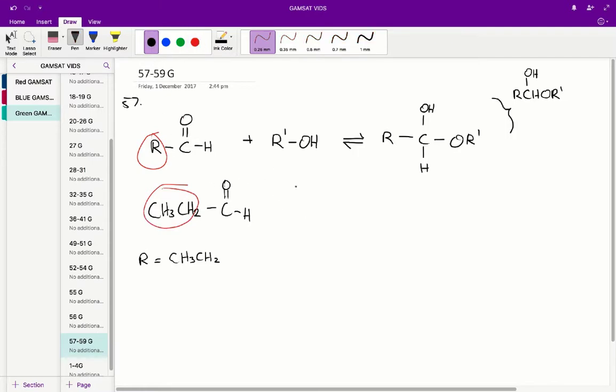And if we do the same thing for ethanol, well ethanol is just going to look like this. So again, our R dash value is going to be CH3CH2.